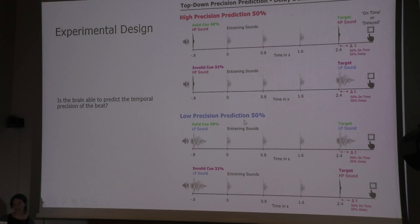So the question is how the brain predicts the temporal precision of a beat. To investigate this, we used a cueing paradigm where we presented sound cues that informed the participant about the acoustic shape of a target sound at the end of the sequence. Thereby we induced two different levels: a high precision prediction and a low precision prediction of the target.